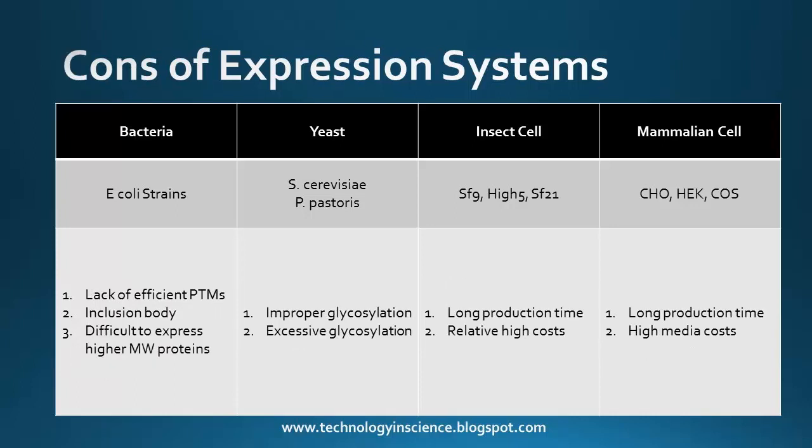Coming to the limitations of these expression systems: E. coli lacks efficient post-translational modification and forms protein inclusion bodies, and it is difficult to express high molecular weight proteins. The disadvantage of yeast is that glycosylation is not always proper and sometimes there is excess glycosylation. Insect cells require longer production time and slightly higher costs. Mammalian cell systems also require long production time and have very high media costs.